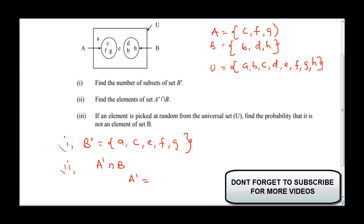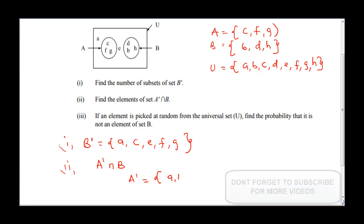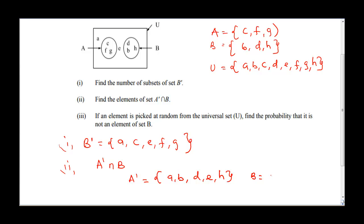We are going to rewrite the universal set excluding C, F, and G. So A complement is going to be: A, B — we skip C — D, E — we skip F and skip G — then H. And remember that set B contains elements B, D, and H.